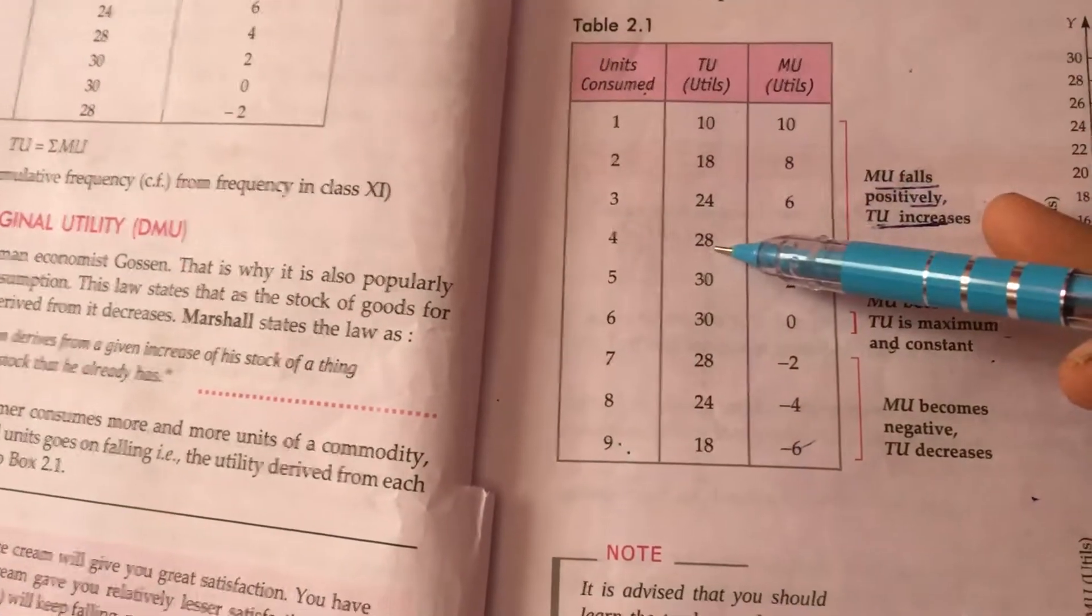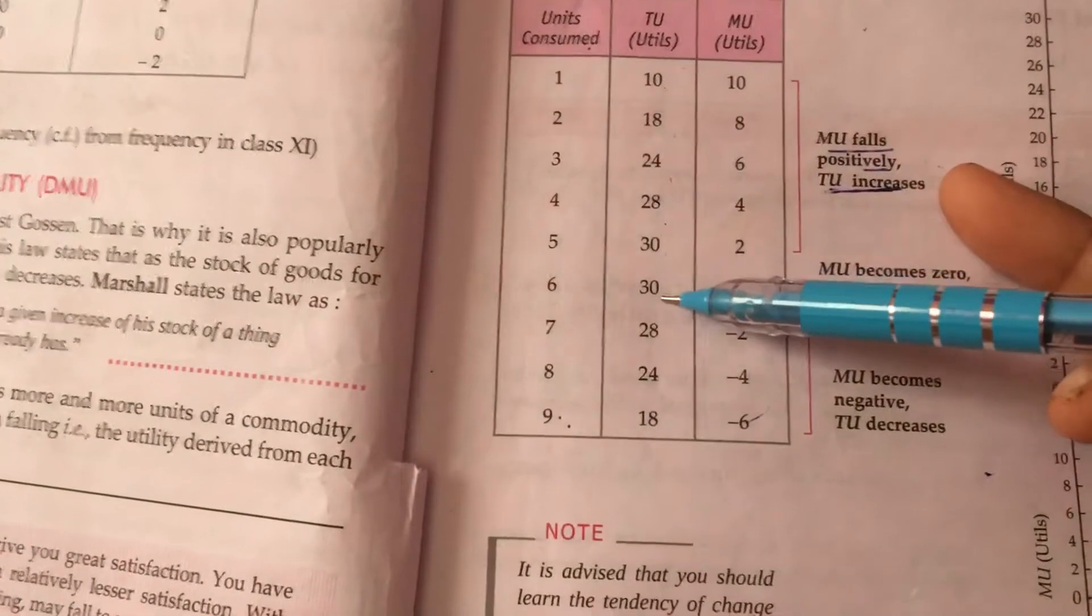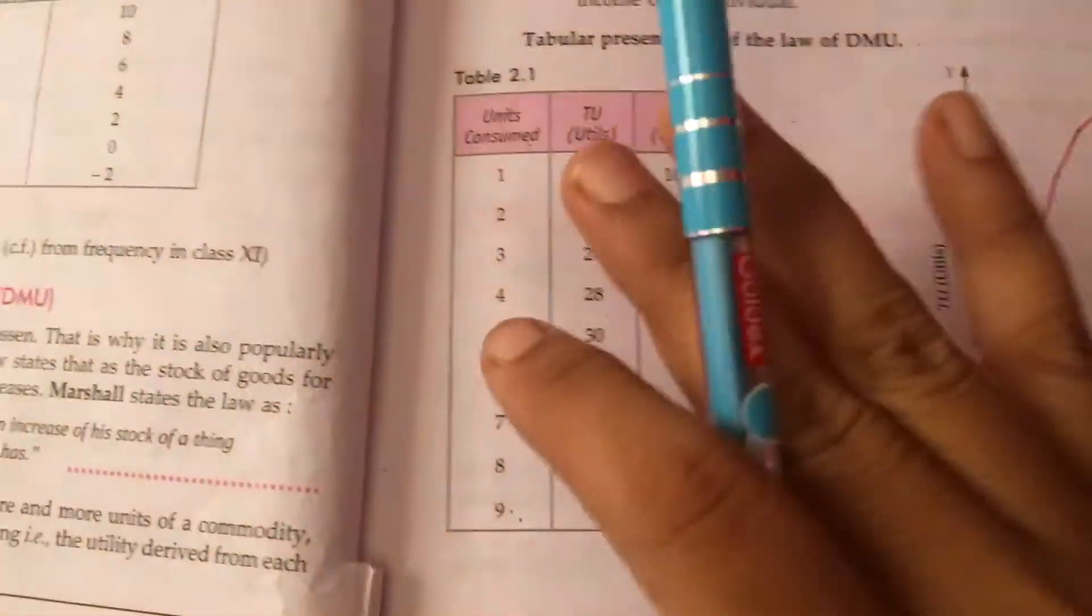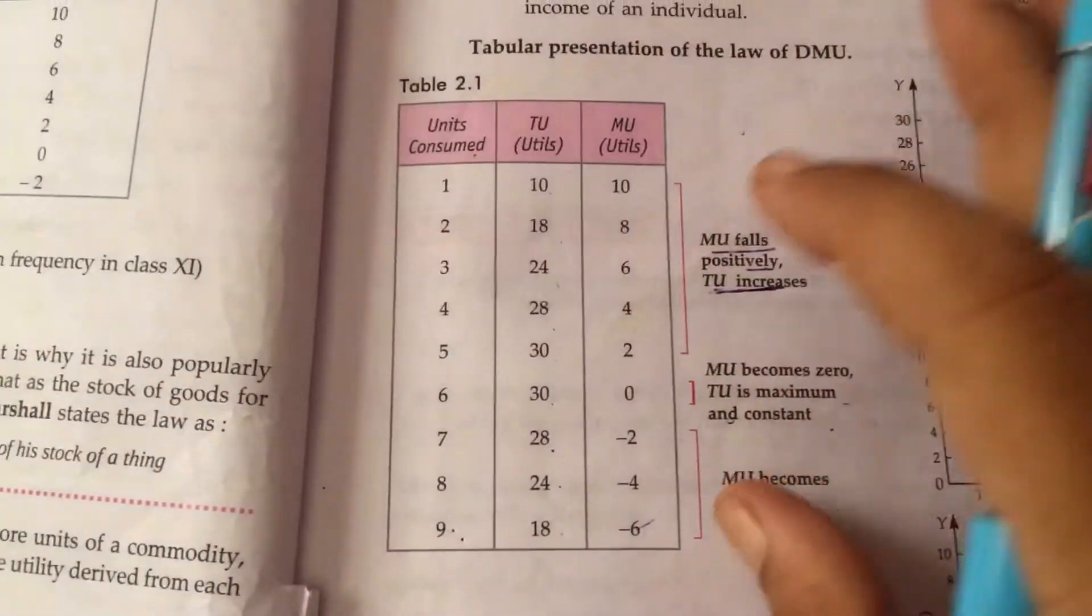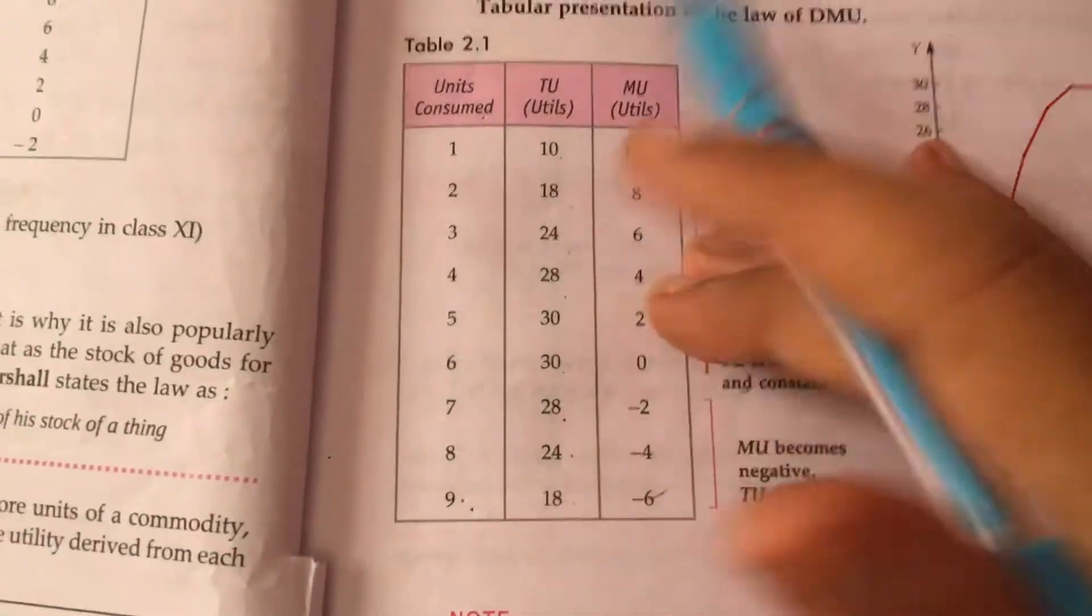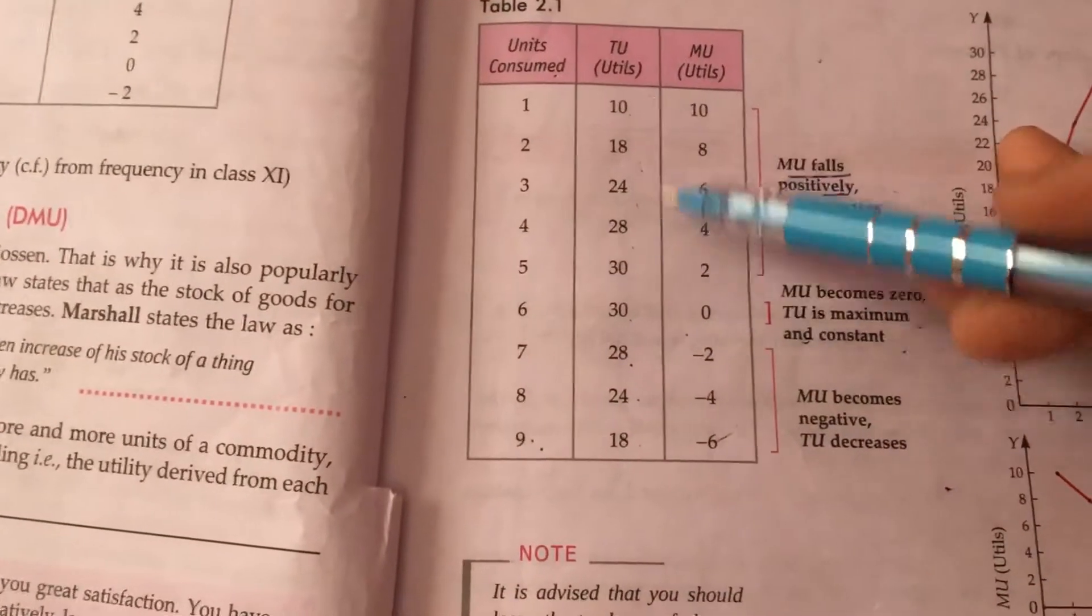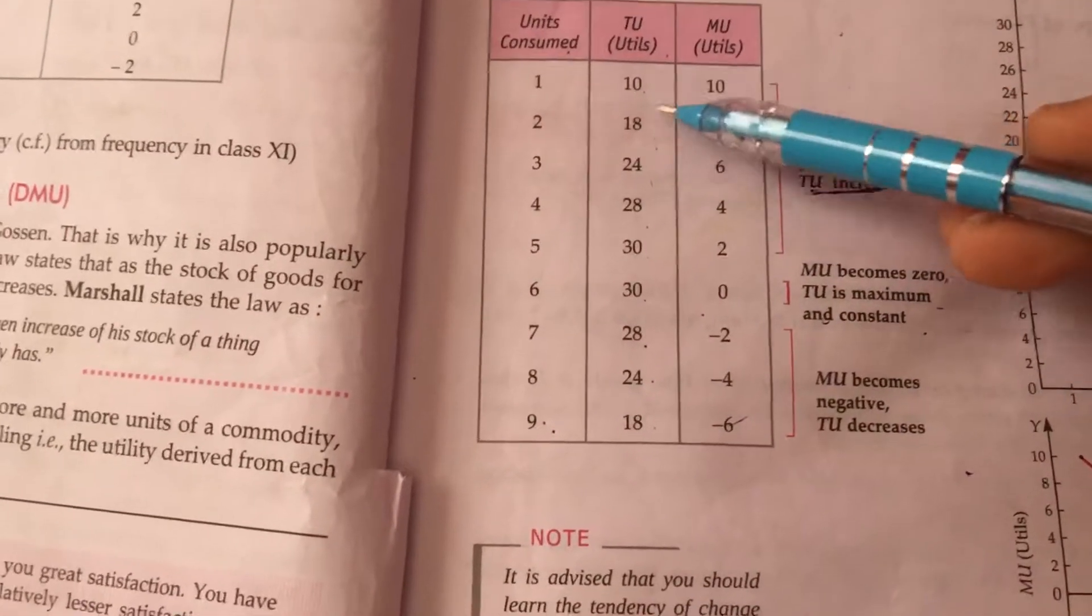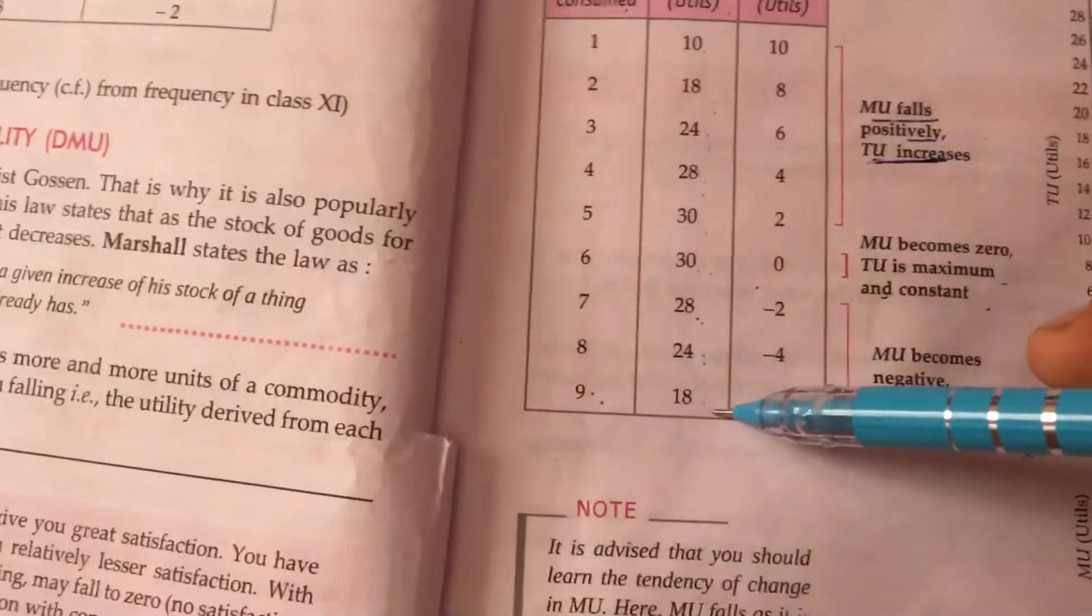And how much is your total utility? Your total utility is 10, 18, 24, 28, 30, 30, 28, 24, 18. It is not fixed, children. You can write the numbers according to your reference book. The numbers which are the total utilities which are given in utils are mentioned as 10, 18, 24, 28, 30, 30, 28, 24, and 18.